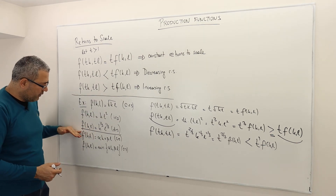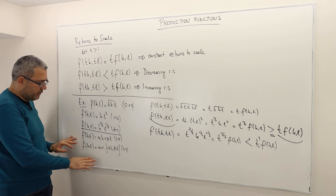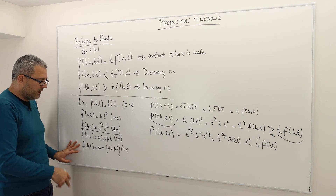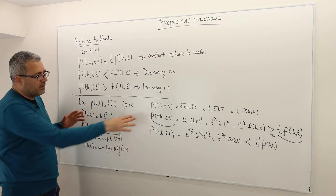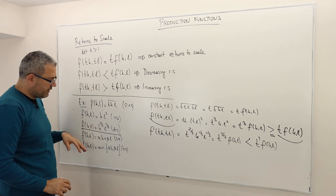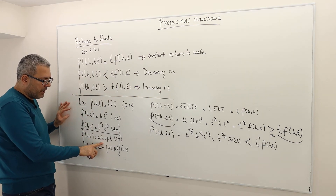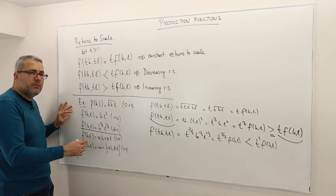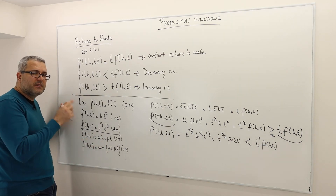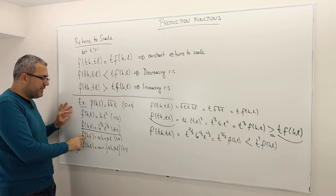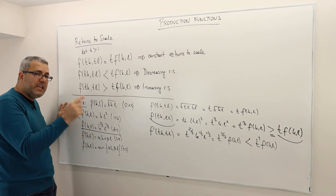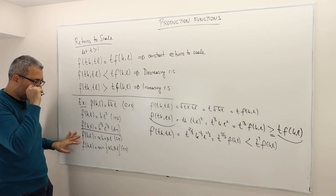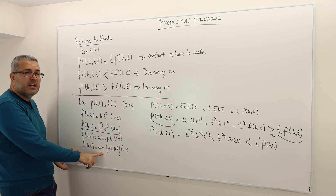Looking at the perfect substitutes example (α·k + β·l) and the Leontief production function, these are constant returns to scale. The proof is similar: t factors out, giving f(tk, tl) = t·f(k,l). Hence both are constant returns to scale production functions.